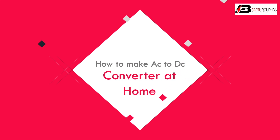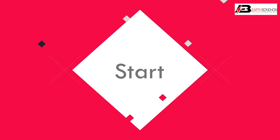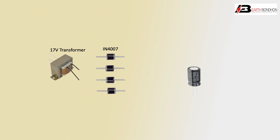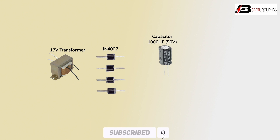Hello viewers, today we discuss how to make an AC to DC converter at home. First, use a transformer — 17 volt transformer — or four rectifier diodes, IN4007 model, or a capacitor — electric capacitor 1000 microfarad 50 volt — or a regulator.